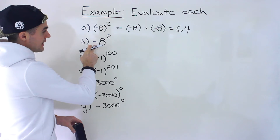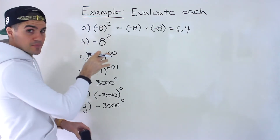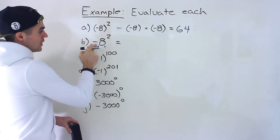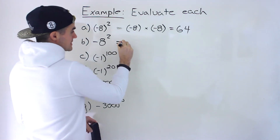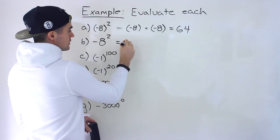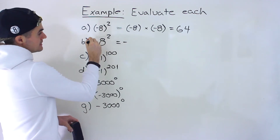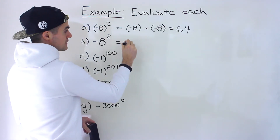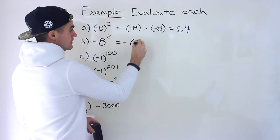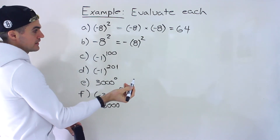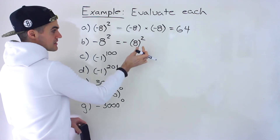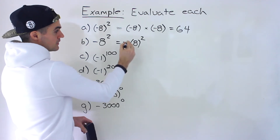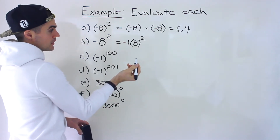So negative 8 times negative 8 gives you positive 64. Now, what would happen if we have negative 8 to the power of 2 without brackets? With these kinds, you have to be really careful. Another way to rewrite this: there's like an imaginary negative 1, because it's not the entire negative 8 that's to the power of 2 — it's only the 8 that's to the power of 2. So it would be like negative 1, and then 8 to the power of 2. The negative is on the outside; it's not part of the base of the exponent.